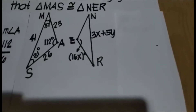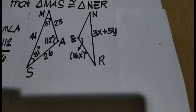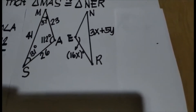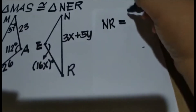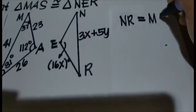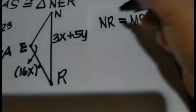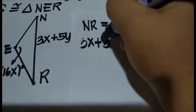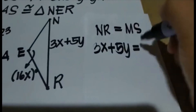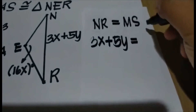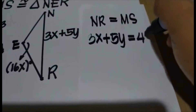To solve for Y, we will use NR is congruent to segment MS. So since they are congruent, we can say that NR is equal to MS. Substitute the value of NR, which is 3X plus 5Y, equals the value of MS, which is 41.